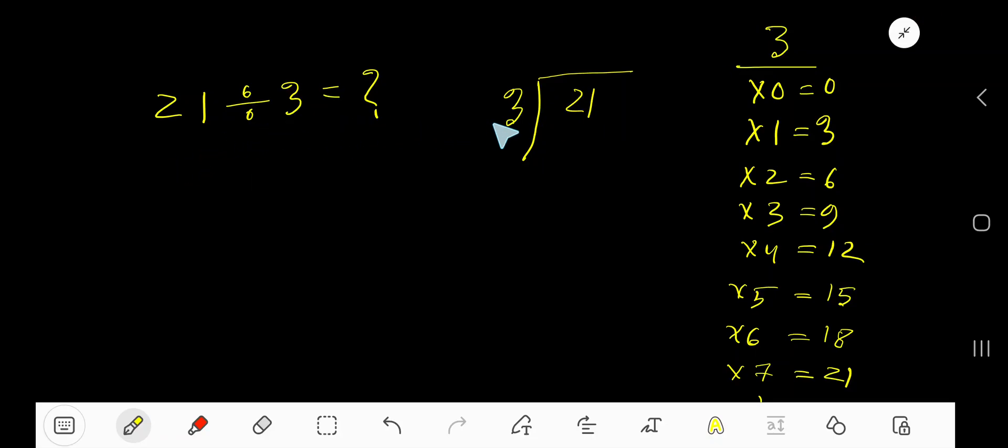21 divided by 3. Here, 3 is a divisor, so we need the multiplication table of 3: 3 times 0 is 0, 3 times 1 is 3, 3 times 2 is 6, 3 times 3 is 9, 3 times 4 is 12.